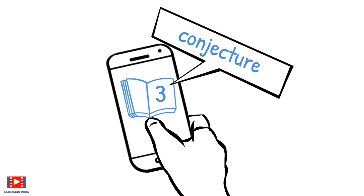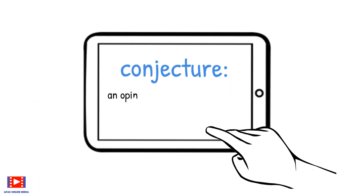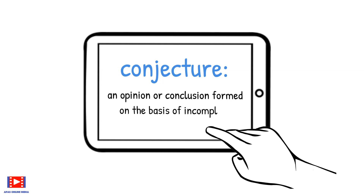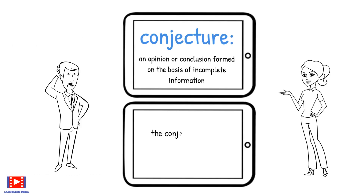Conjecture. Meaning: an opinion or conclusion formed on the basis of incomplete information. Example: The conjectures were based on computer experiments.